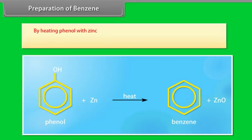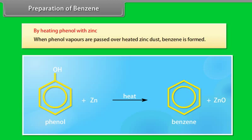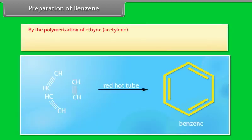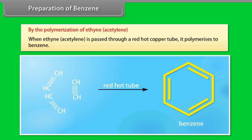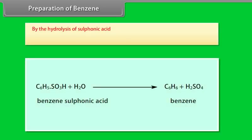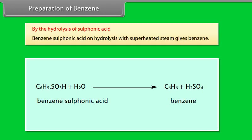By heating phenol with zinc. When phenol vapors are passed over heated zinc dust, benzene is formed. By polymerization of ethyne, acetylene. When ethyne or acetylene is passed through a red hot copper tube, it polymerizes to benzene. By the hydrolysis of sulfonic acid. Benzene sulfonic acid on hydrolysis with superheated steam gives benzene.